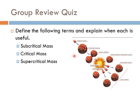Critical mass is where for every time you split an atom, you get exactly one more atom splitting, so the reaction never dies off but never gets out of control either. We use critical mass in reactors. Supercritical mass is used in bombs — for every reaction, you get more than one reaction afterward, so the energy release grows bigger and faster and it goes boom.